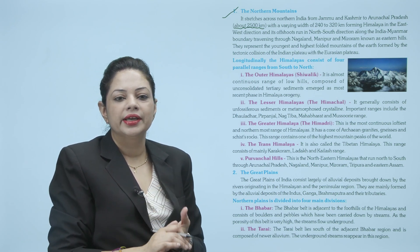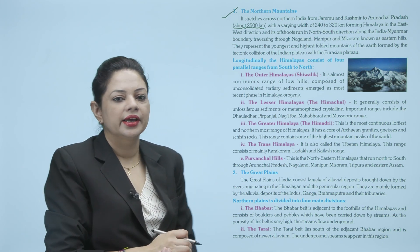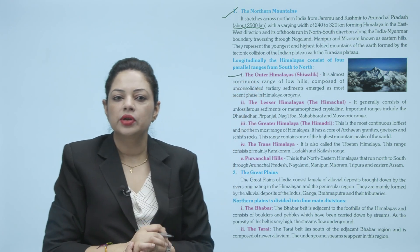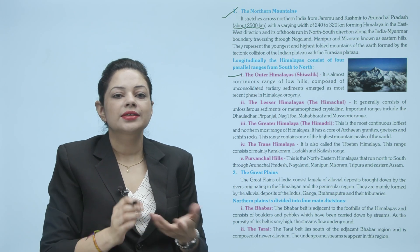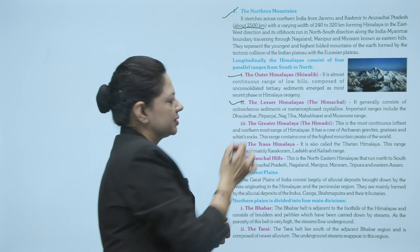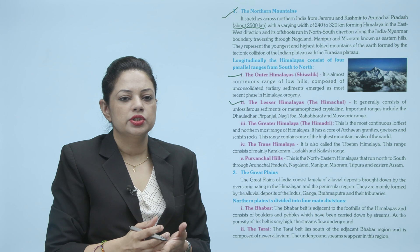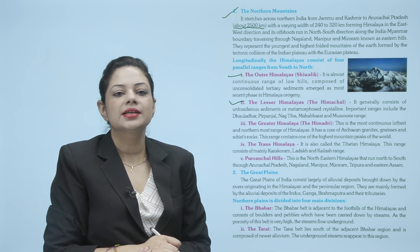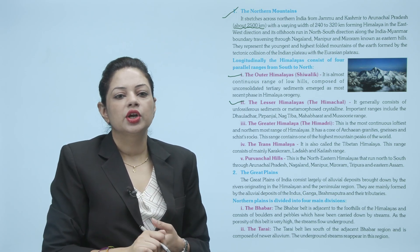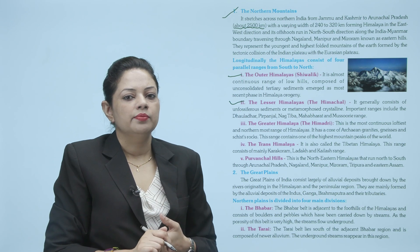Himalaya ko aage divide kiya gaya hai. Himalaya itna broad hai, usko achhe se read karne ke liye teeno parts mein divide kiya hai. First is outer Himalayas, yaani Shivalik — sabse lower jo range hoti hai, low hills — woh outer Himalayas mein account hoti hai. Next is the lesser Himalayas, yaani the Himachal — jo middle range hai. It generally consists of unfolded sediments or metamorphosed crystalline. Important ridges include the Dhaula Dhar, Pir Panjal, Nag Tibba, and Mahabharata and Mussoorie range.